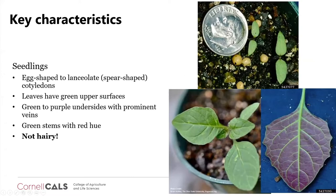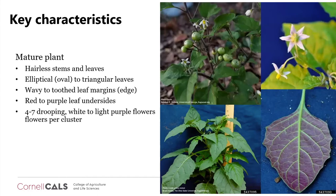At the seedling stage, eastern black nightshade has egg-shaped to lanceolate cotyledons, but they are a little fatter at the base. The leaves have green upper surfaces, but the underside tends to be green to purple with prominent veins. The stems might have a red hue. A very good way to tell eastern black nightshade from hairy nightshade — and even from tomatoes — is that it is not hairy. It has a smooth surface.